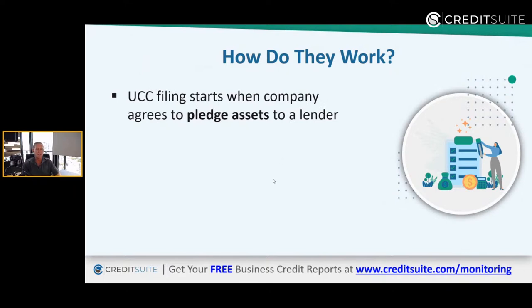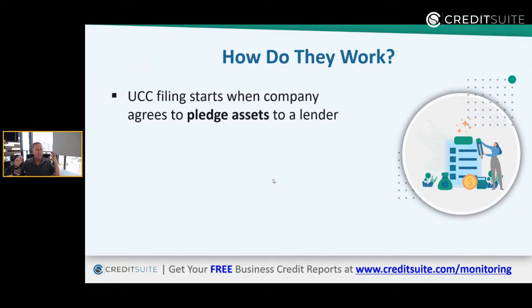A UCC filing starts when a company agrees to pledge assets to a lender. For example, if I go to get an SBA loan, the lender — really SBA's requirement — is that you collateralize assets equal to the loan amount. If business collateral isn't enough, they go after personal collateral as well. So let's say it's commercial real estate: if I ever default on the debt, the lender can come after that property to get their money back.